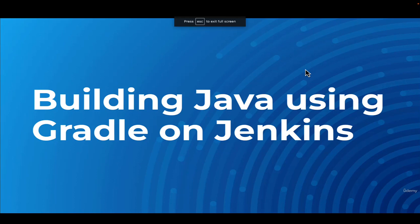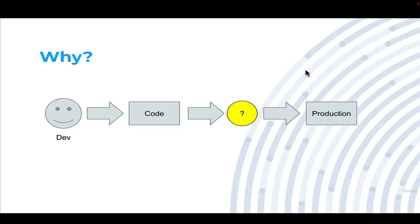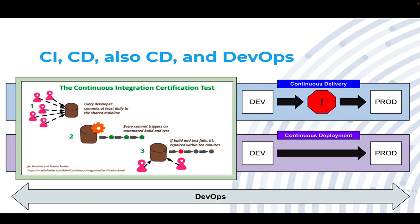Building Java using Gradle on Jenkins. A developer needs to get their code somehow into production, and that mystery is the big question mark in the center. When trying to answer that question, we come up with terms like CI, CD, also CD, and DevOps.